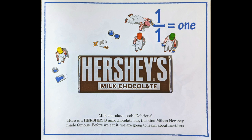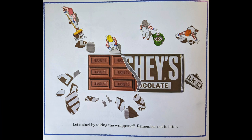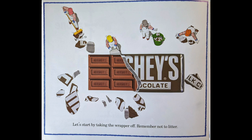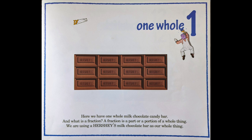Before we eat it, we are going to learn about fractions. Let's start by taking the wrapper off — remember not to litter. Here we have one whole milk chocolate candy bar. A fraction is a part or a portion of a whole thing. We are using a Hershey's Milk Chocolate Bar as our whole thing.